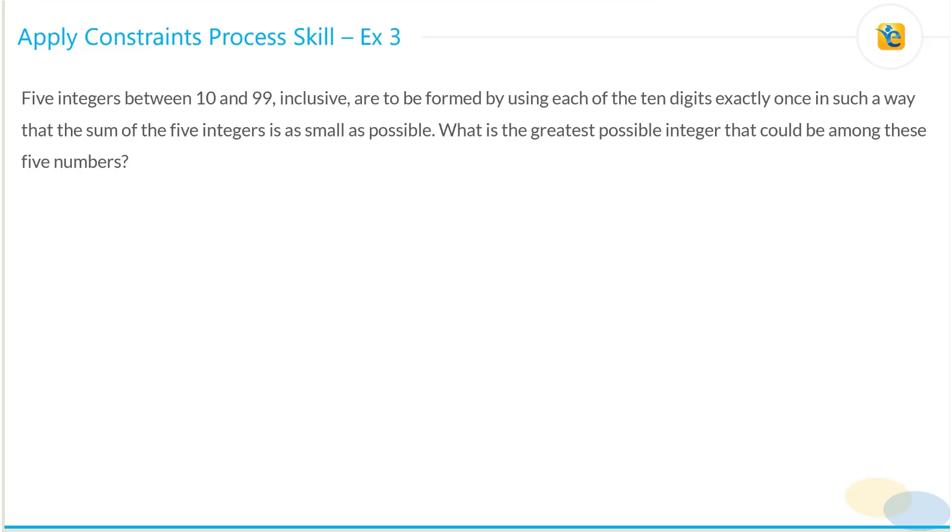Let's read this question. Five integers between 10 and 99 inclusive, so both these numbers are included, are to be formed by using each of the 10 digits exactly once. So each of the 10 digits can be used exactly once.